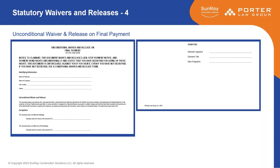The last one is the 'Unconditional Waiver and Release on Final Payment,' which means the check has cleared the bank. You fill this out as before. You can have an exception for disputed claims for extras in the amount of blank, and then you sign it. This is basically saying: I got everything, the check has cleared, it's unconditional and it's final. The only remaining issue is what you listed as the disputed exception, and then you set about trying to resolve it.